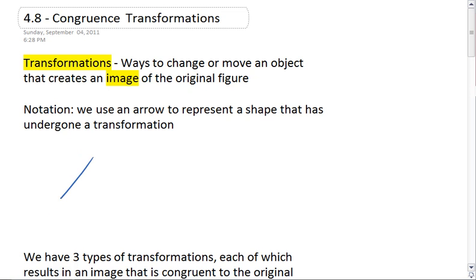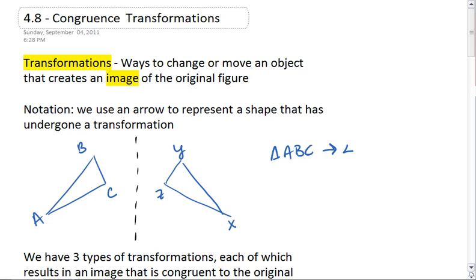For example, I can do what's called a reflection such that triangle ABC is transformed into triangle XYZ. A lot of times you'll actually see the notation be that we use A prime, B prime, C prime, so that it is easier to see what the original vertices were and how they correspond or connect to our new shape.